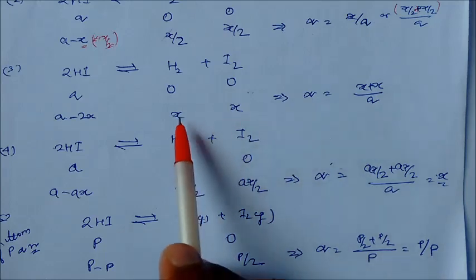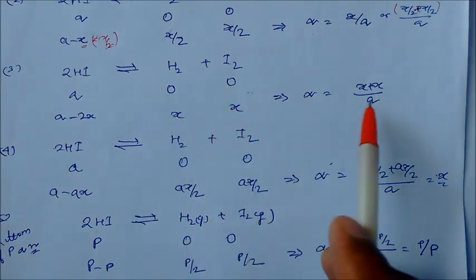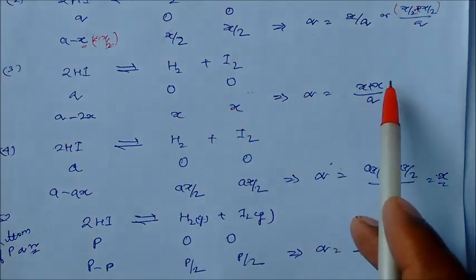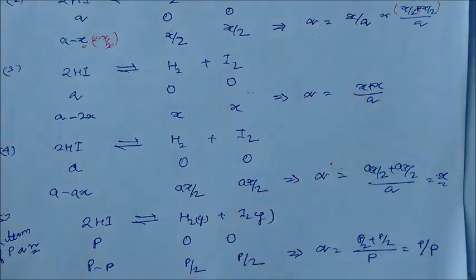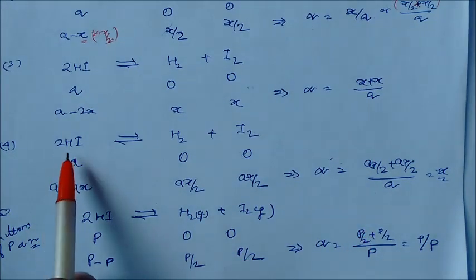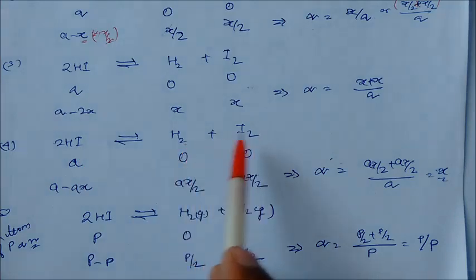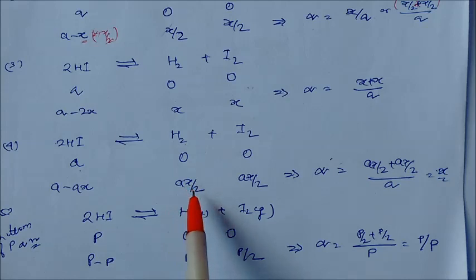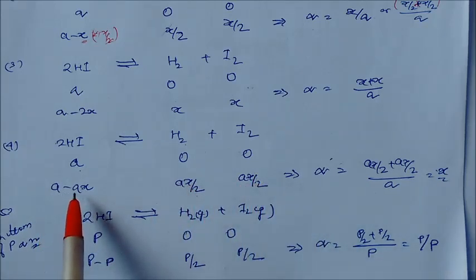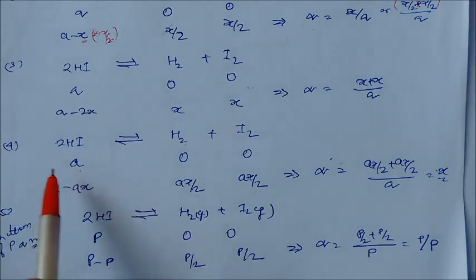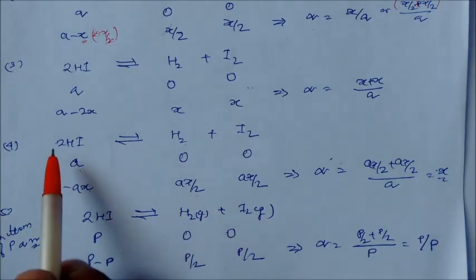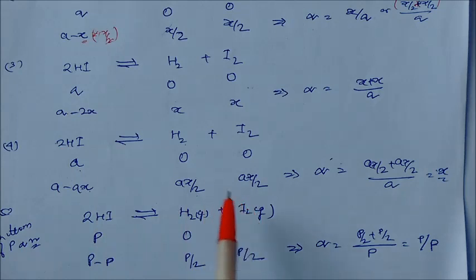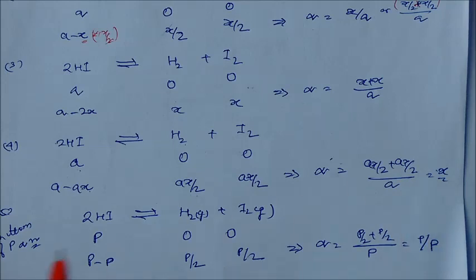So alpha equals the summation of dissociated moles (2x) divided by the total initial moles 'a'. In another way, writing moles as a·(x/2) for each product and a·(1 minus x) for reactant, the summation divided by a again gives alpha = x.